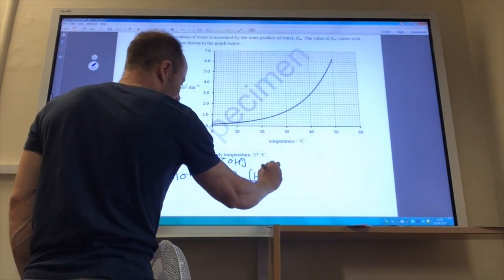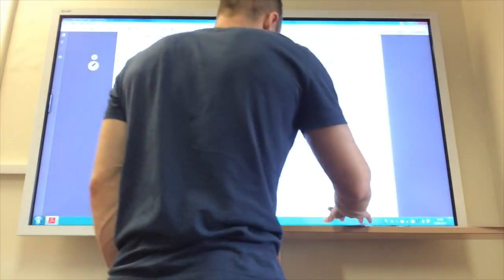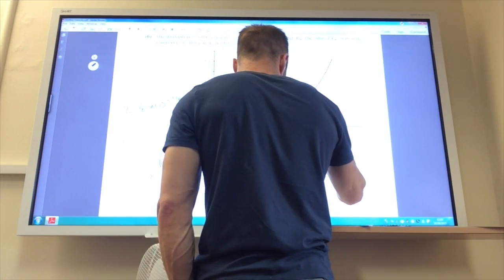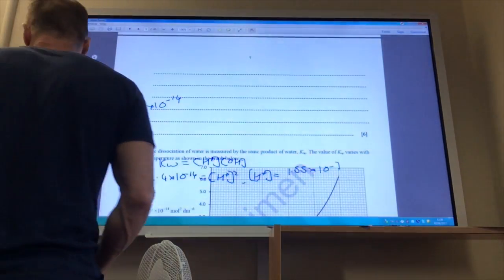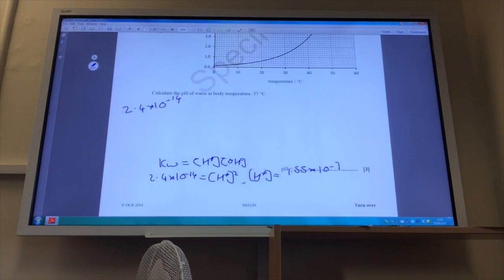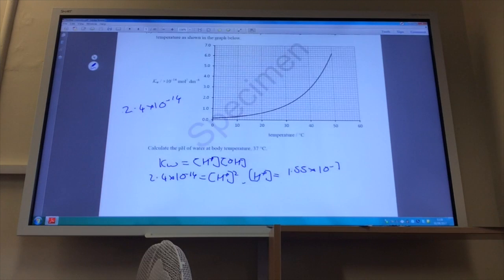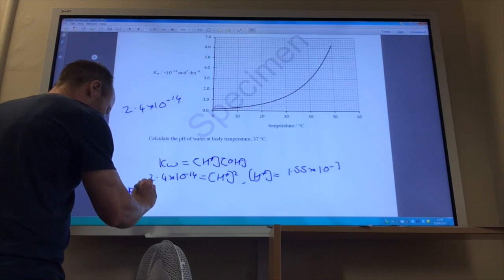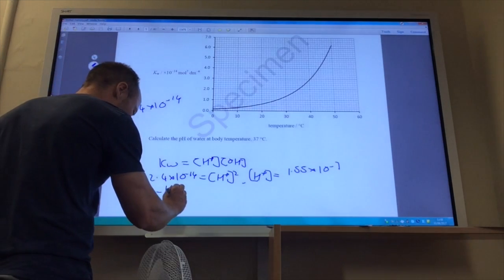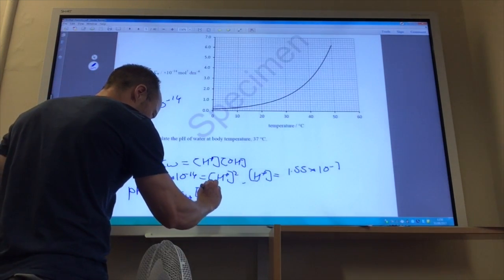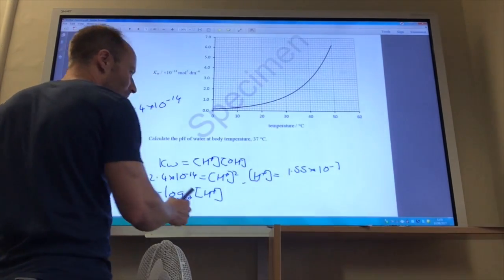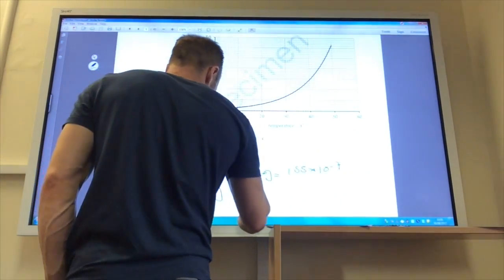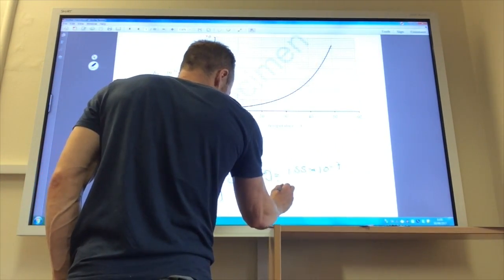And therefore, the concentration of H+, you just square root that and that comes to 1.55 times 10 to the minus 7. Then you need to put that in your pH equation. So you've got pH equals minus log to the base 10 of the concentration of H+ ions. You find the log of that number and change the sign and you'll find out that pH is 6.81.